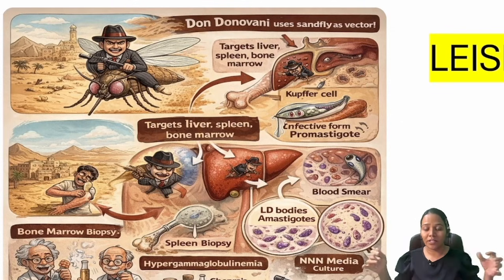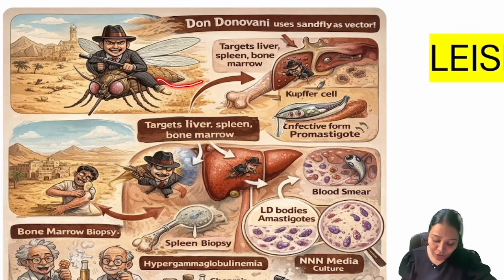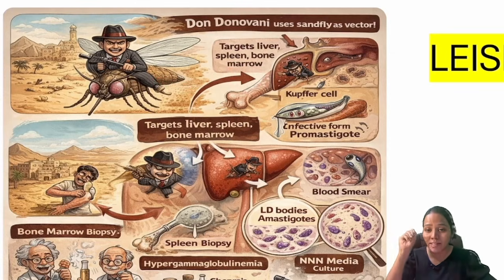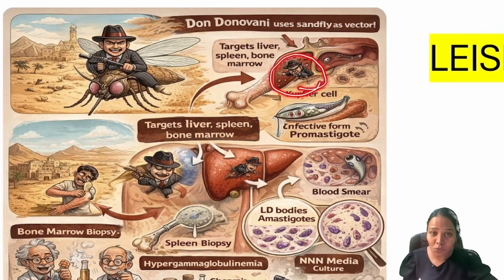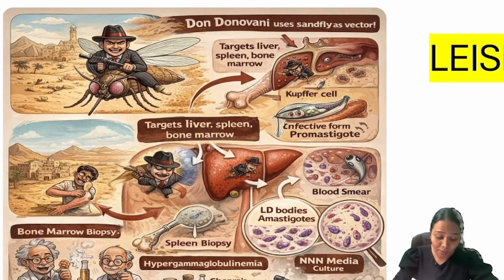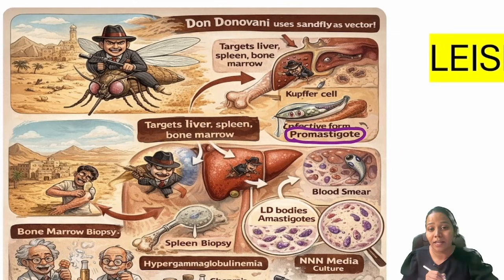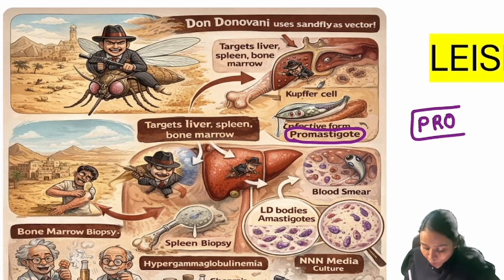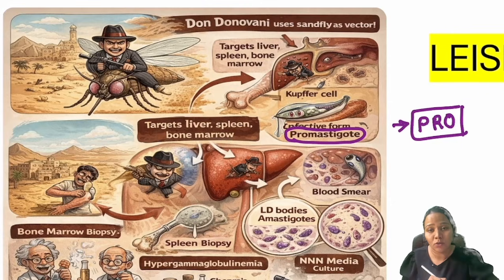A don wants to accumulate wealth from all villages, so he goes and affects the adjacent village people — he injects them. Once the sand fly injects them, the don enters the body. The infective form before entering the body is the promastigote form. You have to be a pro to be successful, so the don infects in the promastigote form.